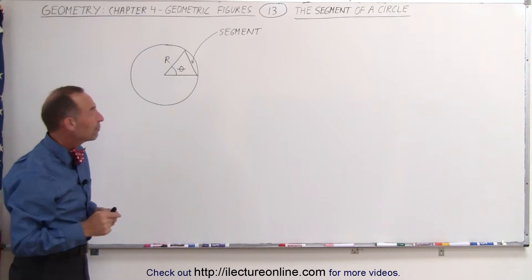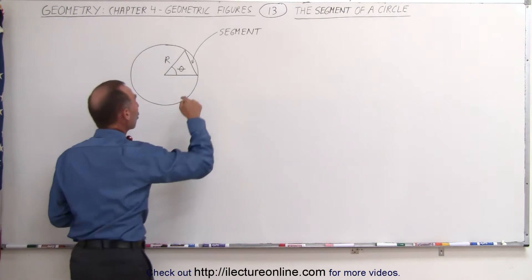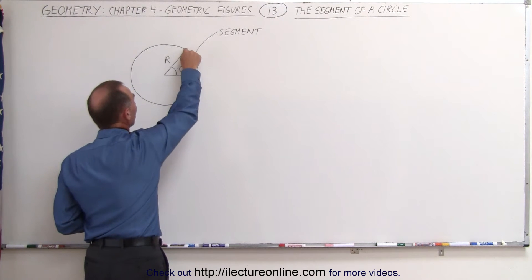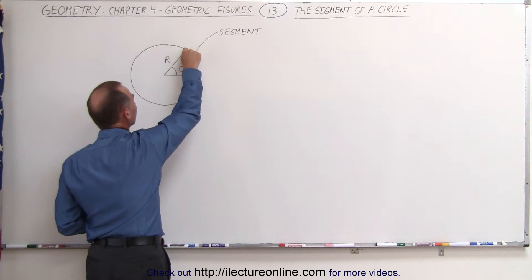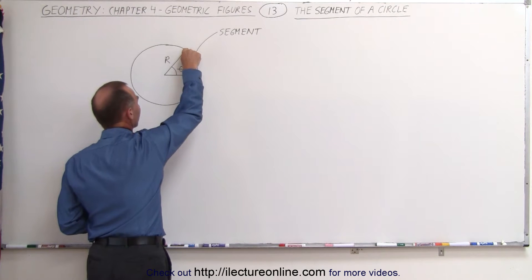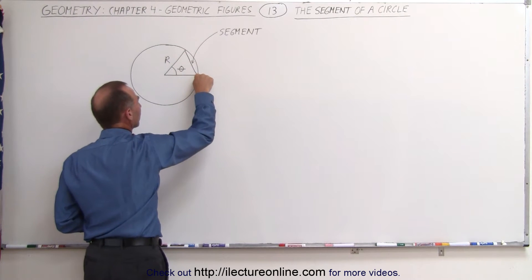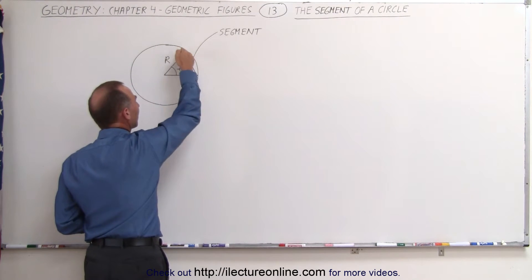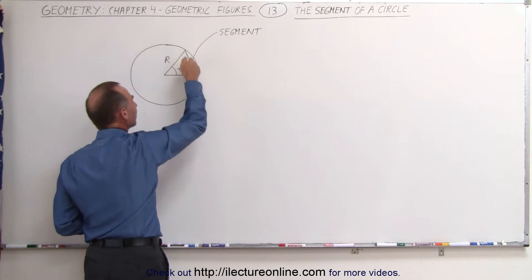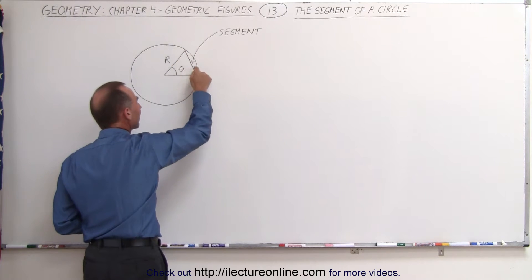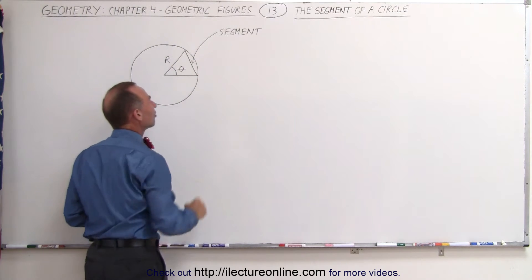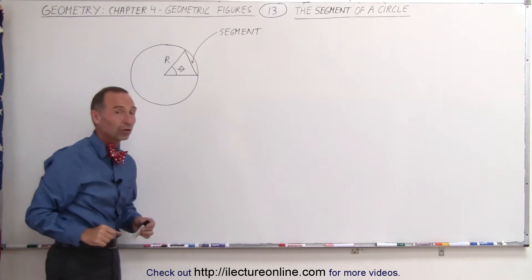Now if we draw a chord from where the radius touches the circle on one side to where the radius touches the circle on the other side, we have a small piece on the outside of that chord — that's called the segment of the circle.